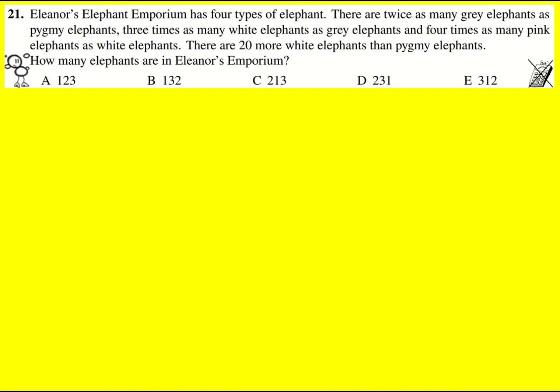There are twice as many grey elephants as pygmy elephants. Now, later on I already see they refer to pink, so I'm not going to use P for either pink or pygmy. I'm going to use Y for pygmy and K for pink, just to distinguish them.